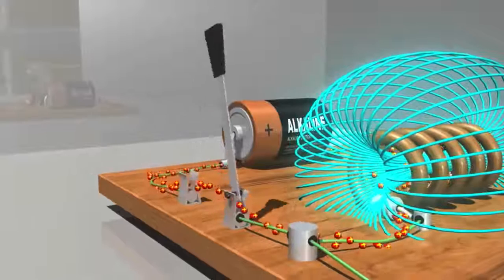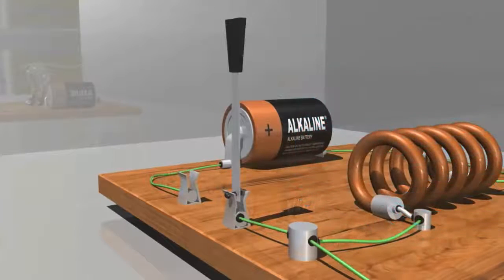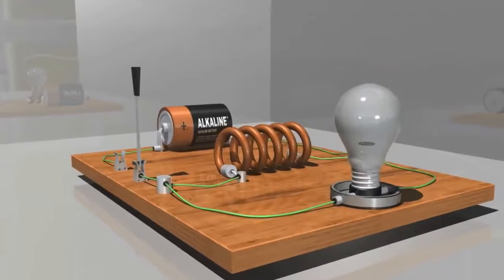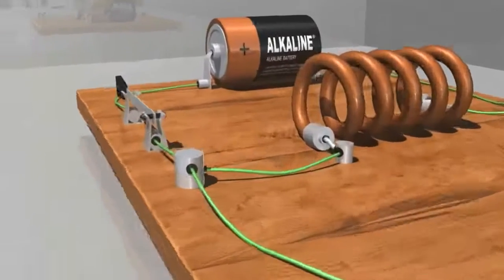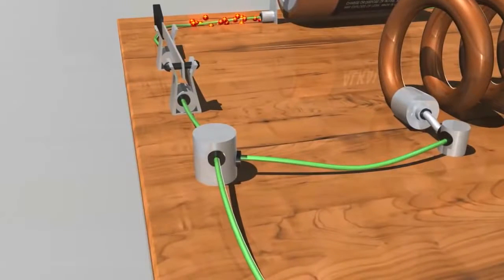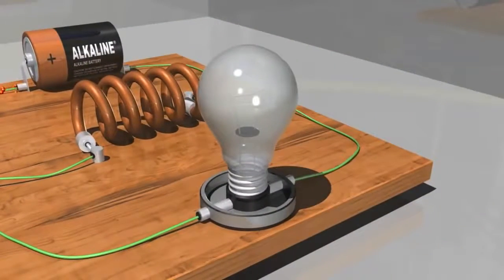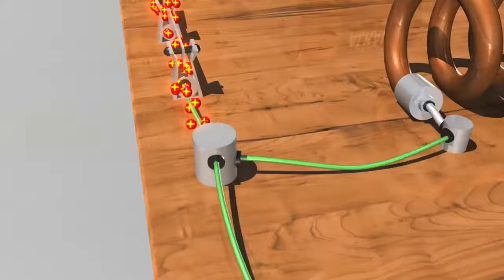Let's watch this again, but this time we'll pay closer attention to what's happening in the wire conductor. In this parallel circuit, the current can travel either through the inductor or through the light bulb. When the current reaches this junction, it splits and flows to both the inductor and to the light bulb.